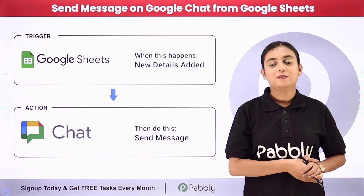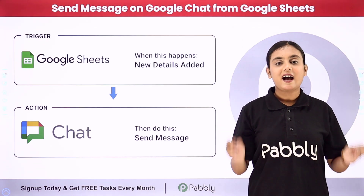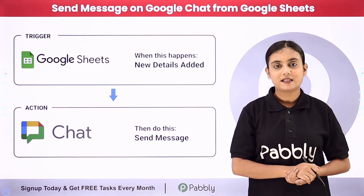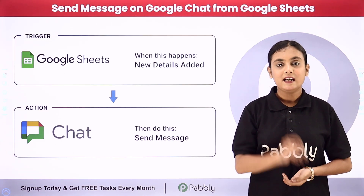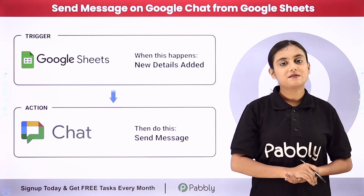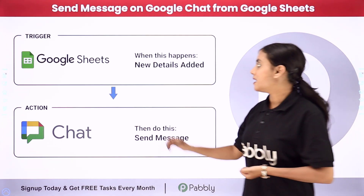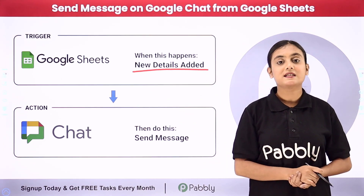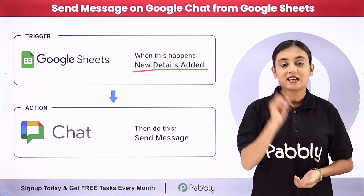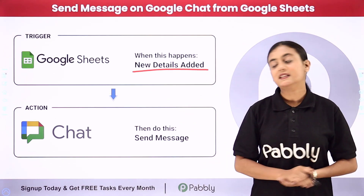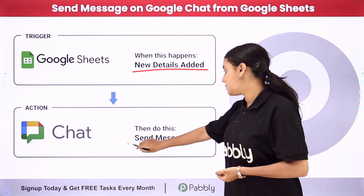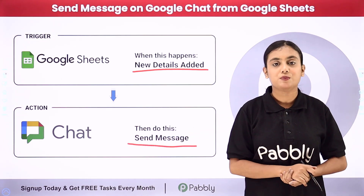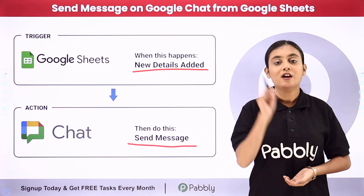I am an owner of a business and I am currently hiring new employees in my company. My objective is that as soon as I add the details of the new hired employees in my Google Sheets, automatically on my Google Chat space that I have created, a message for that new hired employee should be forwarded.